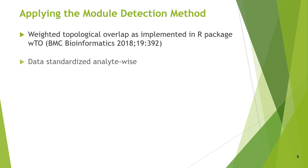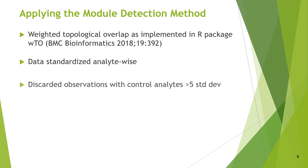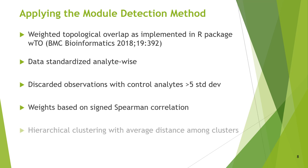Data were standardized on an analyte-per-analyte basis, considering all 27 participants. Observations whose control analyte-per-analyte was at least one of four, resulting in more than five standard deviations of the sample, were discarded. Few such observations were found. The relationship between the nodes was weighted using sine-Spearman correlation. These correlations were input into WTO to estimate the weighted adjacency matrices, which were then used in a hierarchical clustering model based on the average distance.